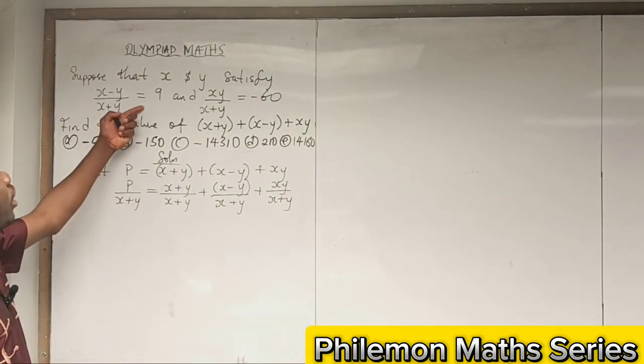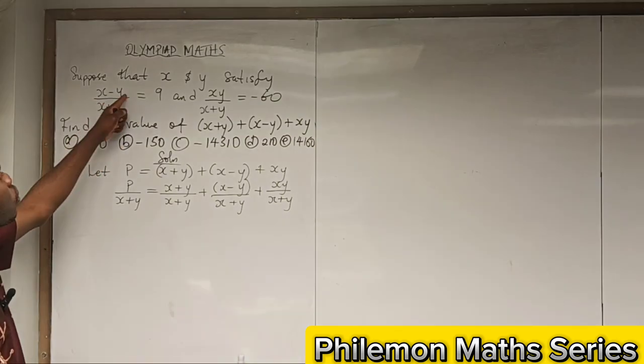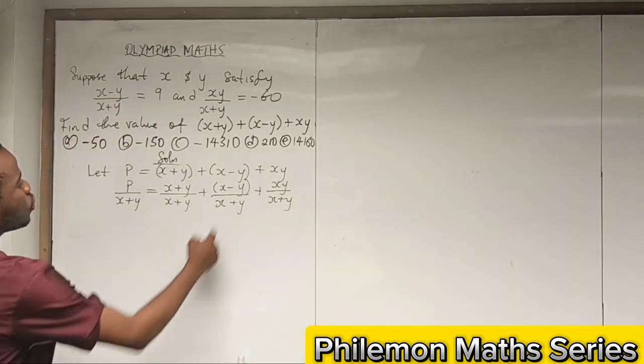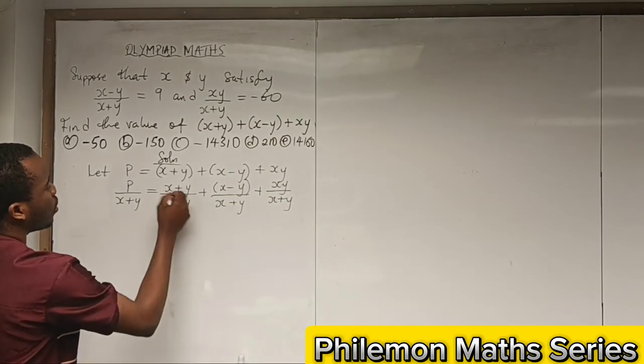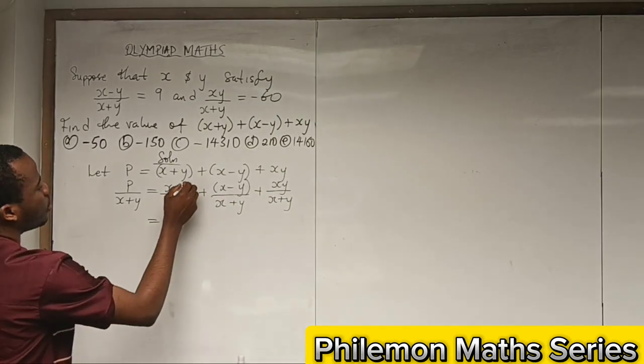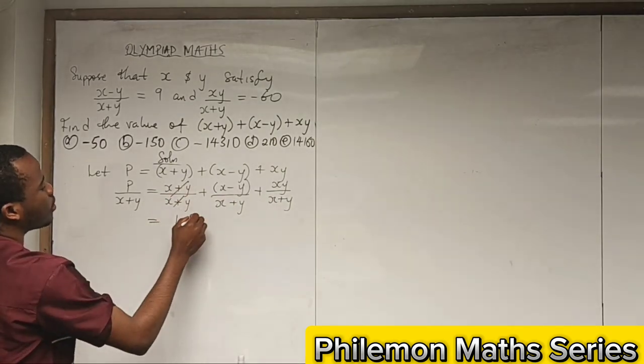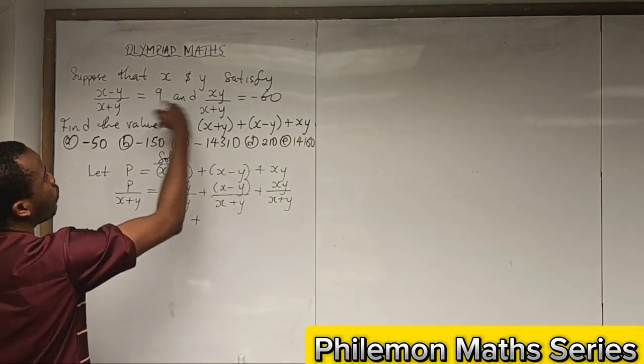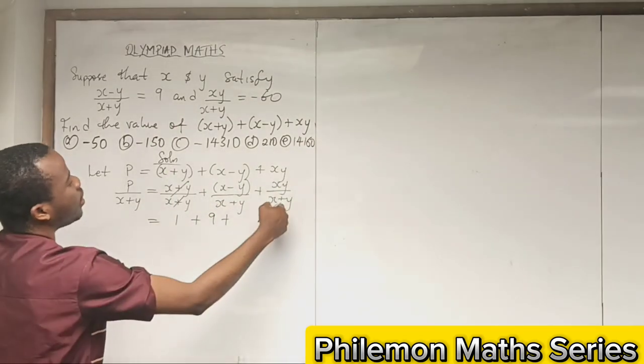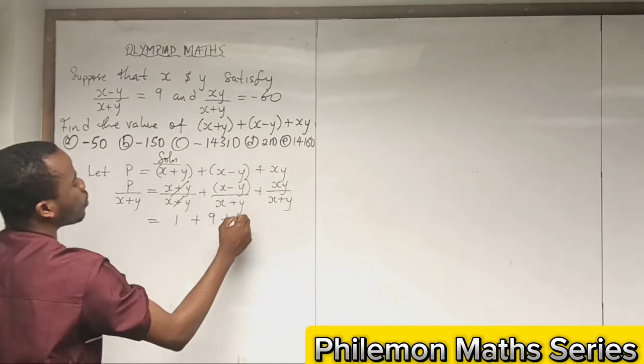Now from the equation given, we have that (x - y)/(x + y) = 9, so this is 1, this is 9, and this is -60.